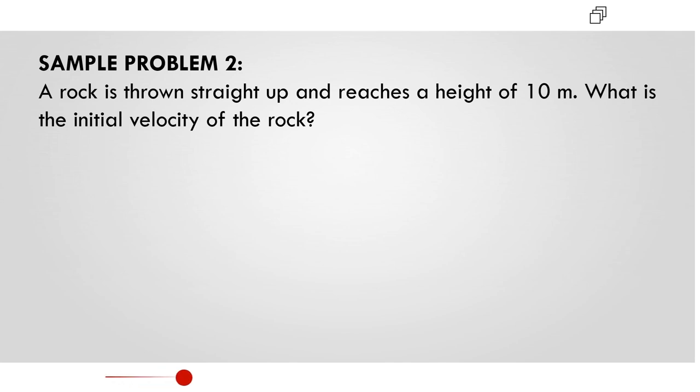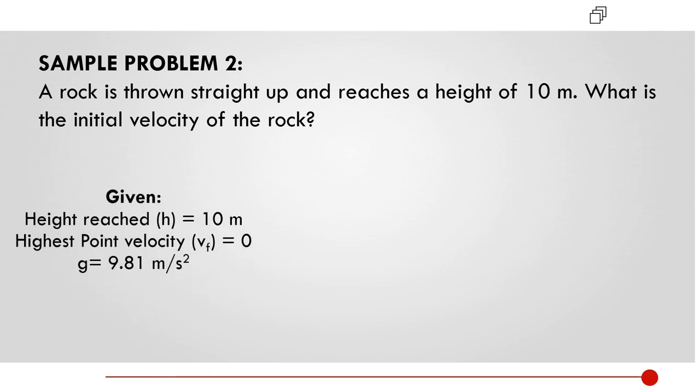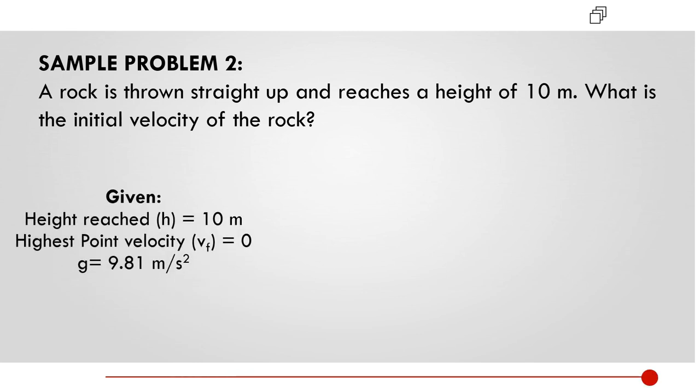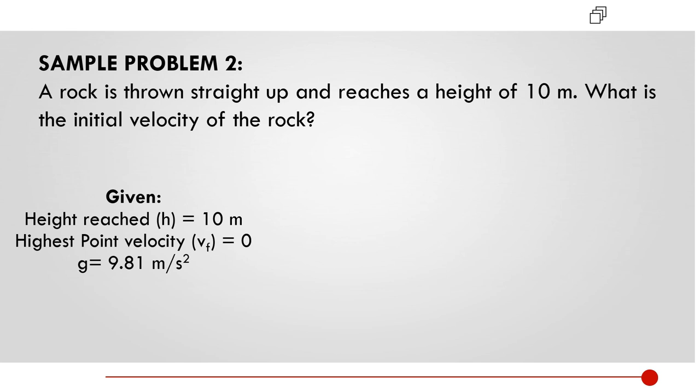Sample problem number 2. A rock is drawn straight up and reaches a height of 10 meters. What is the initial velocity of the rock? The given values are height, which is denoted by letter H, is equals to 10 meters, highest point of velocity, or the final velocity, is equals to 0, and the gravity, which is equals to negative 9.81 meter per second squared.